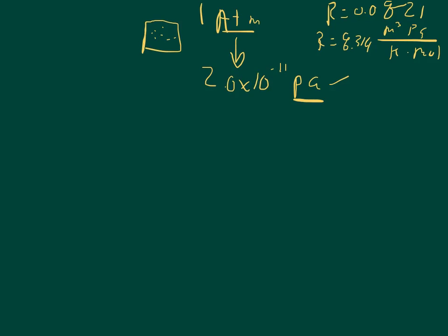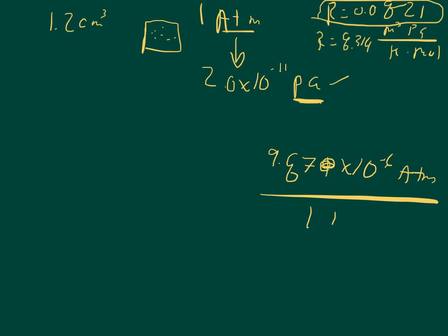Now if we use meters cubed, then we have a problem because it's 1.2 centimeters cubed and we have to convert that to meters cubed, which is not hard but you have to decide how you want to do that. I like the old-fashioned way that I was taught in Gen Chem 1, to use the 0.0821, so I will convert my pascals to atmospheres. And the conversion for that is 9.87 times 10 to the negative 6 atmospheres for every 1 pascal.